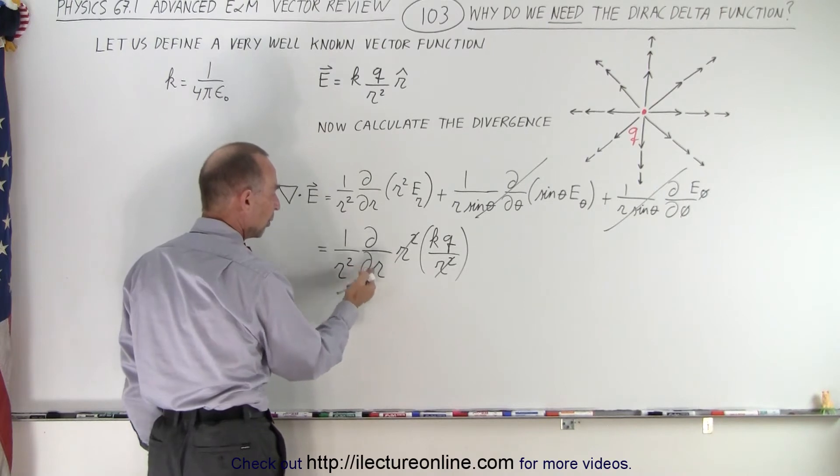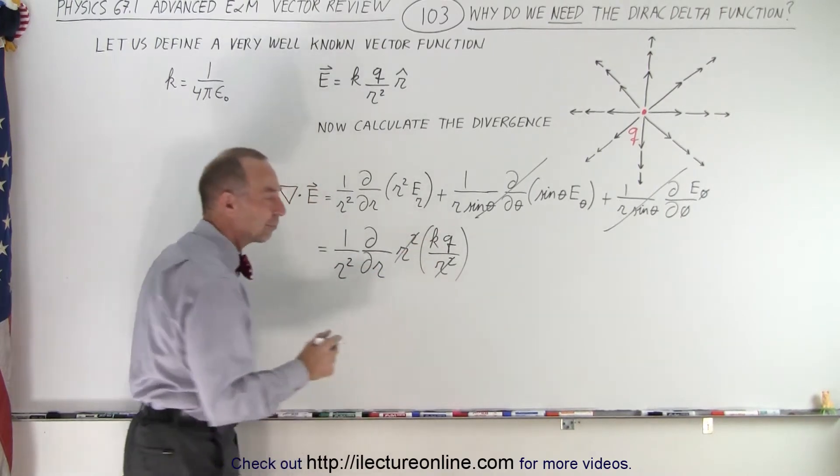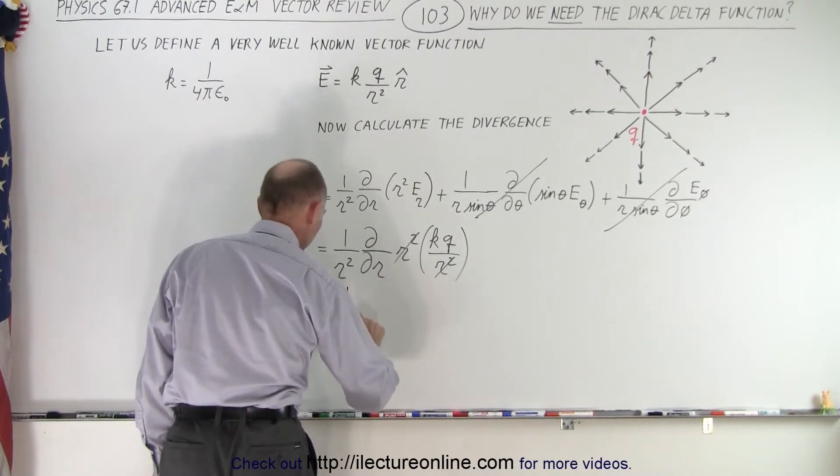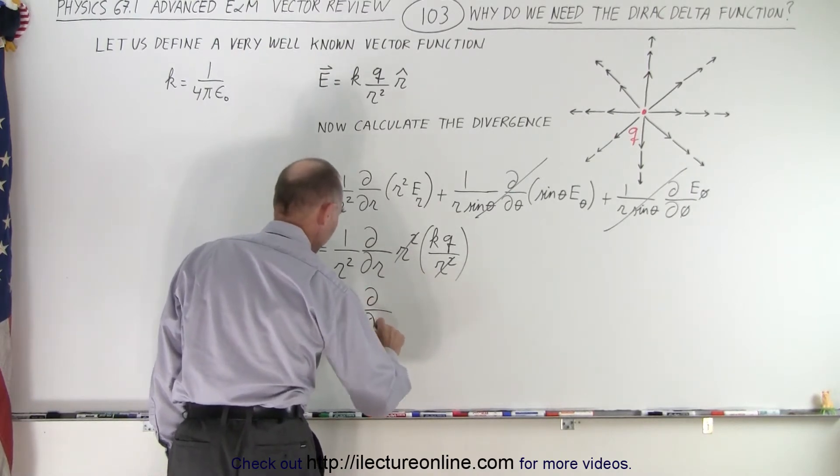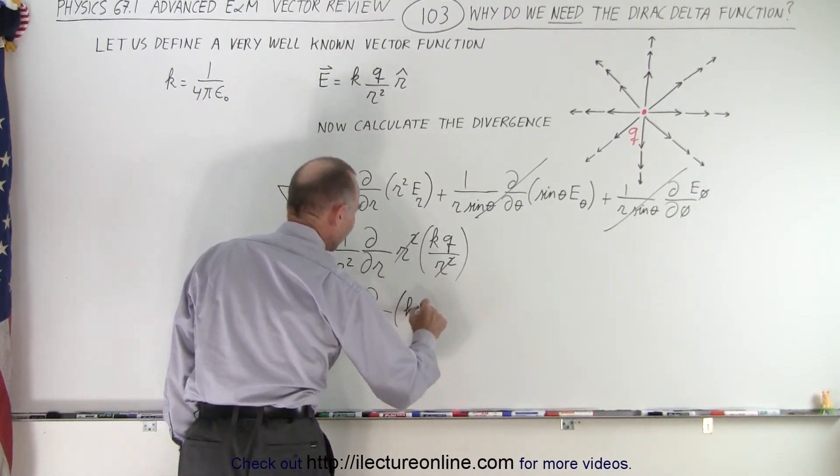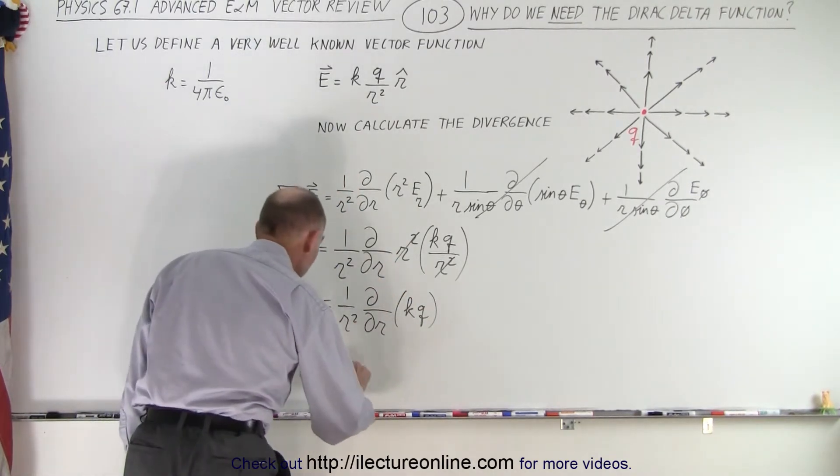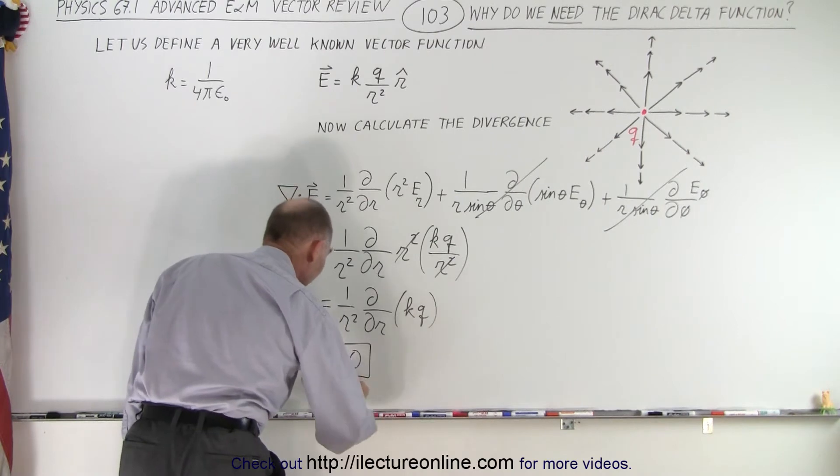But that's a constant, so here we get 1 over r squared times a partial derivative with respect to r of a constant. And of course, the derivative of a constant is equal to 0, which means that the divergence of that function,